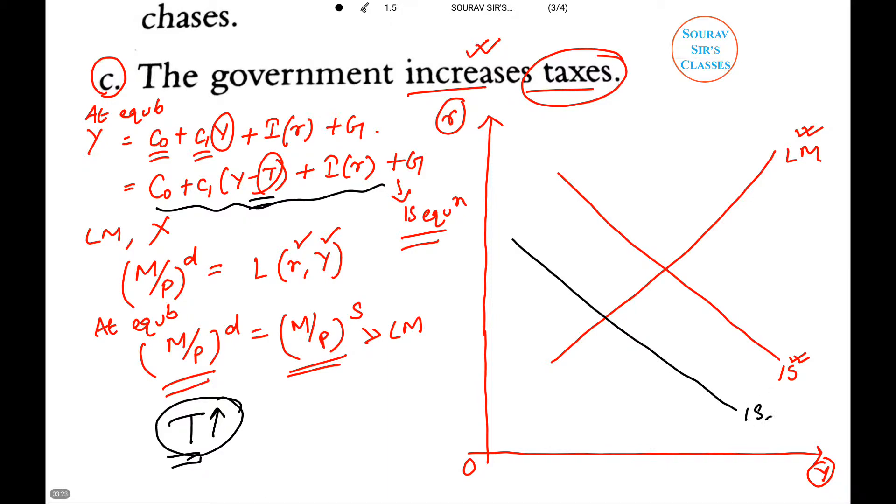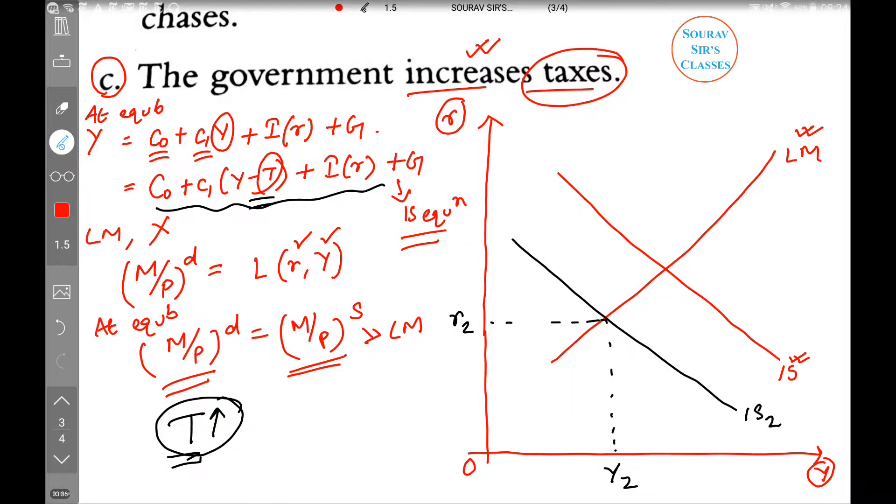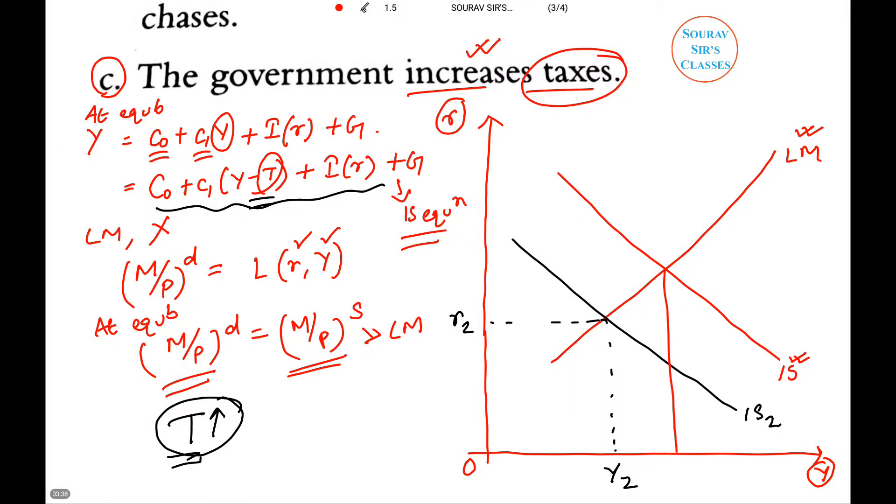If this is IS2, this is your new Y2, R2. Let me mark the initial equilibrium level of output, equilibrium output level and equilibrium interest rate. And the extent of shift...